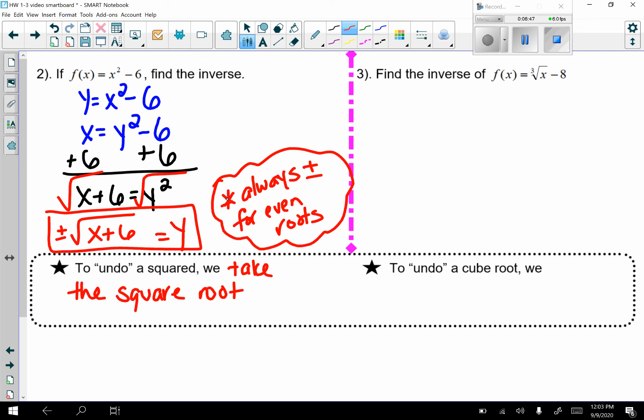And lastly, number 3. Find the inverse of f(x) equals the cube root of x minus 8. First two steps are always the same. y equals the cube root of x minus 8. I'm going to switch my x and y. From here, we're going to solve. Add 8 to both sides. I have x plus 8 equals the cube root of y.